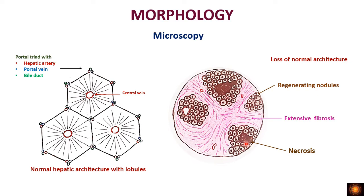After loss of normal architecture, we have necrosis and the remaining hepatocytes start proliferating, forming regenerating nodules. These regenerating nodules are separated by thickened bands of fibrous tissue, because the stellate cells deposit large amounts of collagen causing fibrosis. So microscopically we have regenerating nodules, extensive fibrosis, and necrosis.